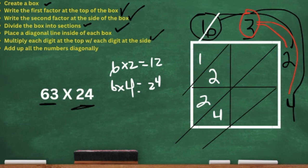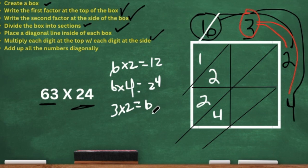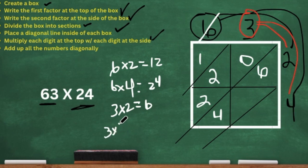We multiplied the six by the two and by the four, so now we are going to do the three. We have three times two and three times four. First we have three times two — three times two is six. Now remember, six is a one-digit number and we have to make it a two-digit number, so we're just going to add the zero in front of it. And then we have three times four — three times four is 12. That is a two-digit number. We're going to put that in that last section.